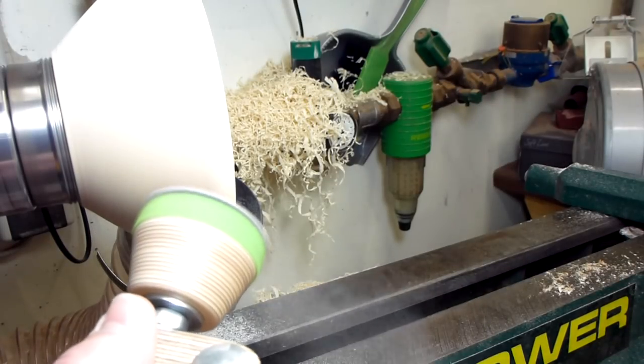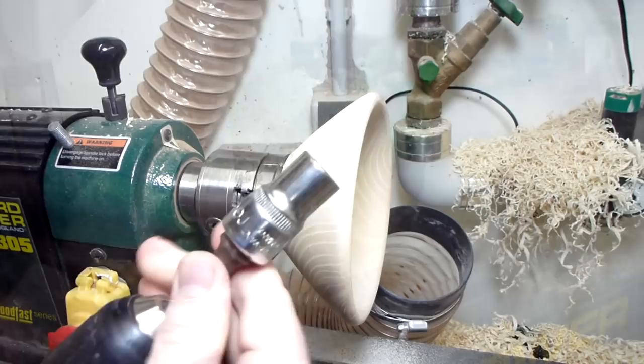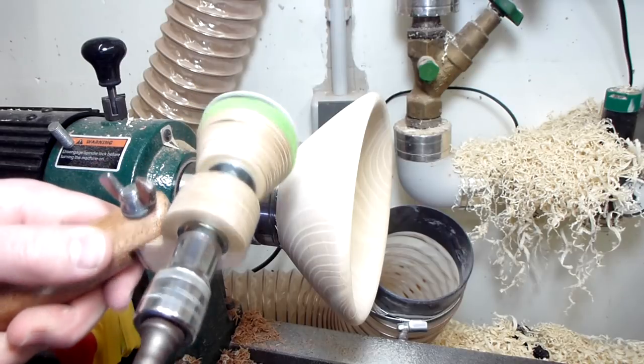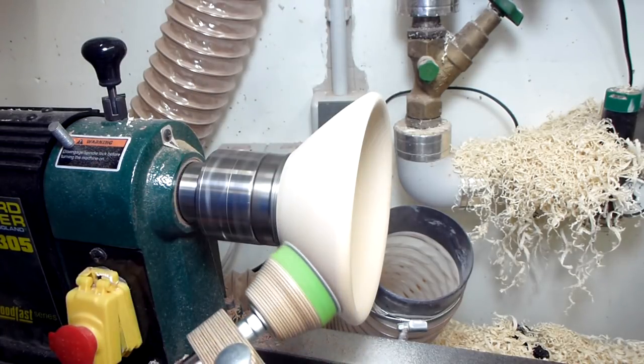With a 80 grit sandpaper you can do some really heavy sanding with it. And if you want to be even more aggressive you can power the sanding pad with a drill. That's great if you have to sand out some torn out grain.